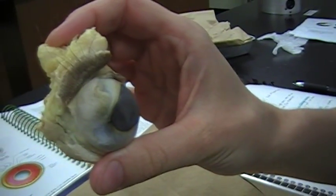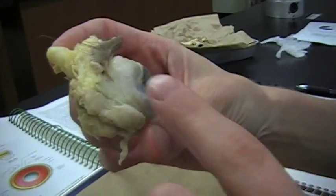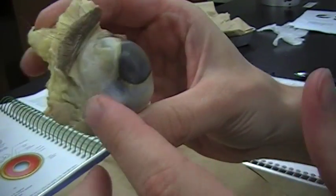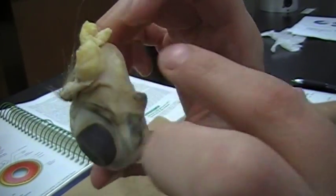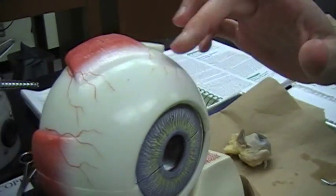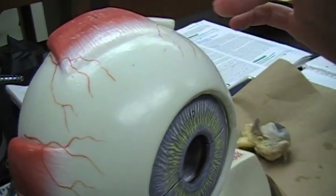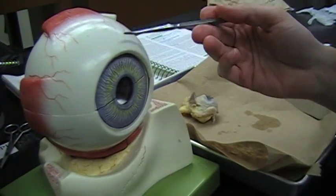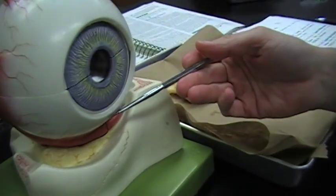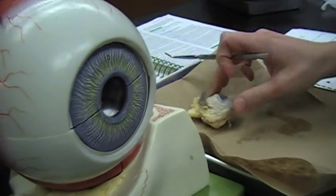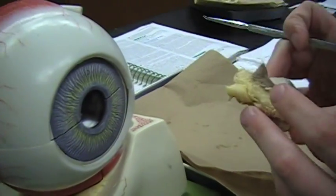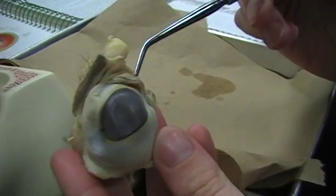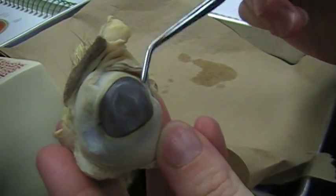First we're going to show you the sclera, and that is the outermost layer. Here it is on the actual eye, underneath all the fat, and then here it is on the model. And the cornea is the sclera coming over the pupil and the iris, and here it is on the actual eyeball.